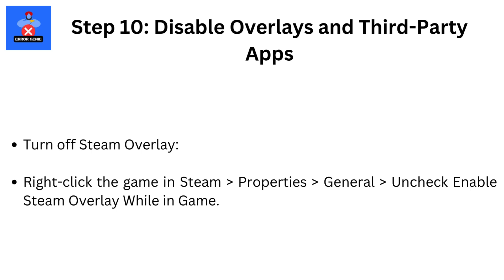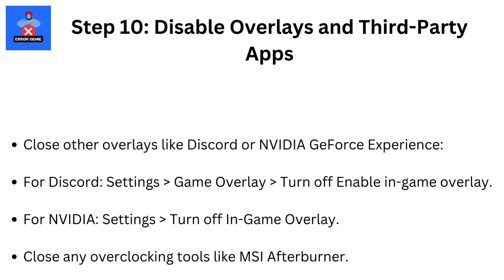Step 10: Disable Overlays and Third-Party Apps. Turn off Steam Overlay by right-clicking the game in Steam, then Properties, then General, then uncheck Enable Steam Overlay. Close other overlays like Discord or NVIDIA GeForce Experience. For Discord, go to Settings, then Game Overlay, and turn off Enable In-Game Overlay. For NVIDIA, go to Settings and turn off In-Game Overlay. Close any overclocking tools like MSI Afterburner.